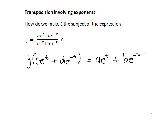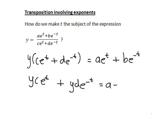That looks a little better, but we have t trapped inside brackets on the left. So the next logical step is to expand those brackets, which gives us yc·e^t plus yd·e^(-t) equal to ae^t plus be^(-t).